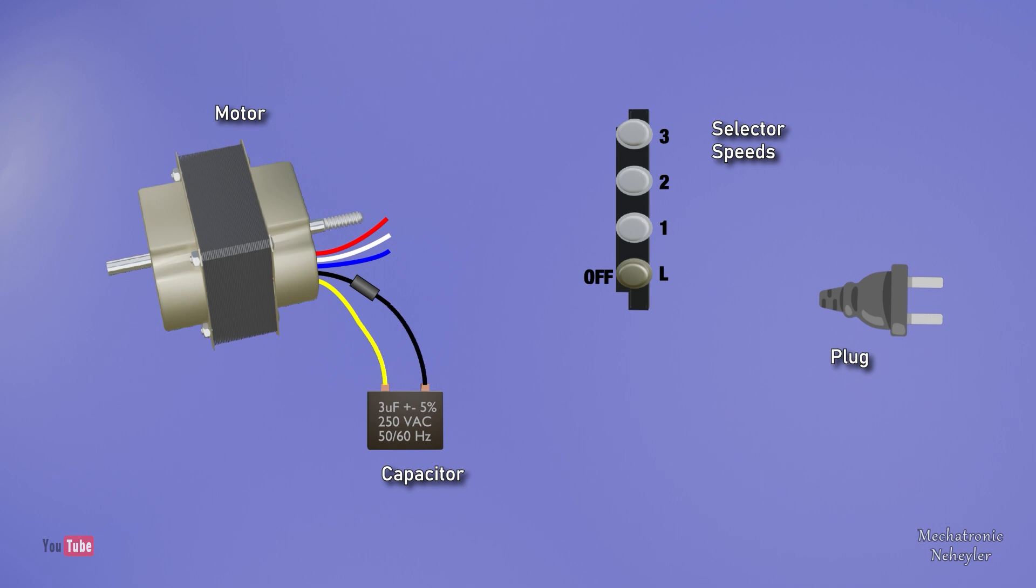The connection would be like this: the capacitor must be connected between the yellow and black wire. From the plug's phase wire it is connected to the L terminal of the gear selector. From terminals one, two, and three it is connected to the three motor cables. And finally, from the neutral wire it is connected to the black motor cable.